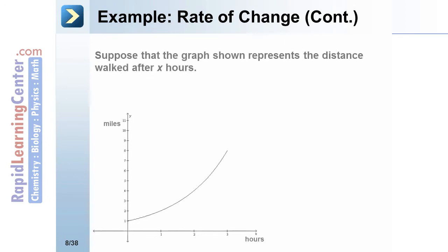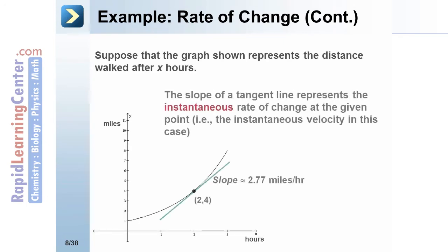Now suppose that we wanted to find the instantaneous rate of change. Instead of using the slope of a secant line, we would need to use the slope of a tangent line at the ordered pair (2,4). On this graph the instantaneous rate of change is 2.77 miles per hour. This instantaneous rate of change is actually the instantaneous velocity at this point.